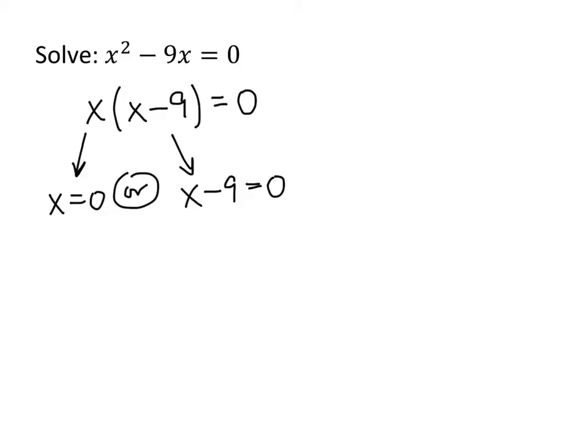So that means that x equals 0 is one of our solutions. And the other solution isn't too hard to figure out from this other equation. Let's just add 9 to both sides, and we get our other solution as x equals 9.